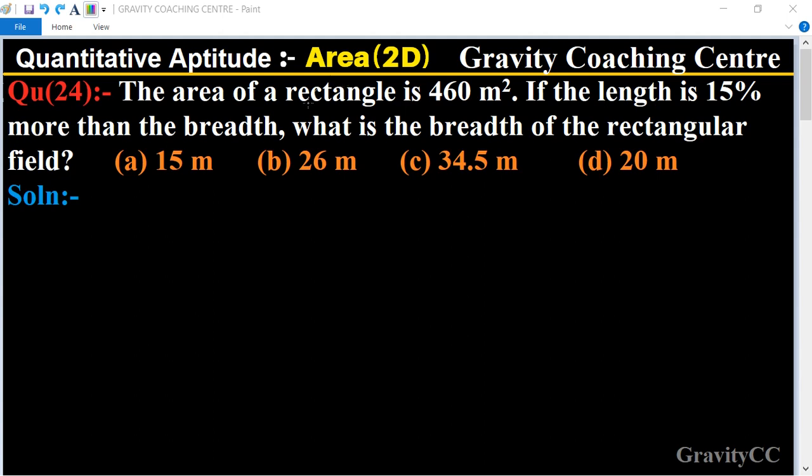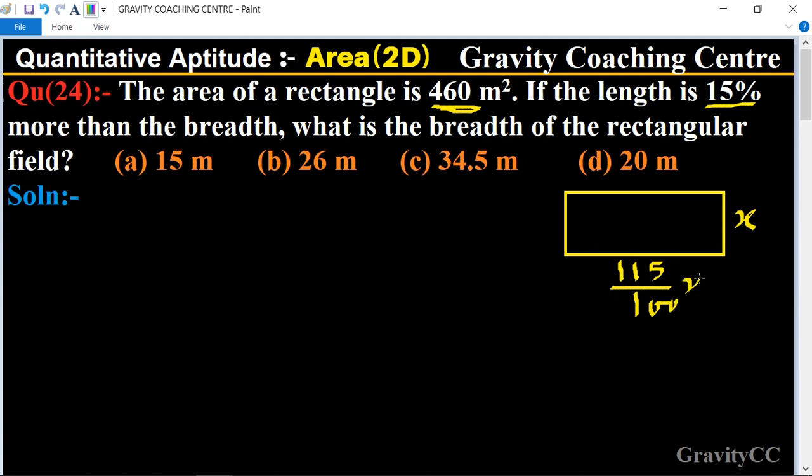In this question, area is given 460 meter square and length is 15% more than the breadth. So first of all we let the breadth be X, so length is 15% more means 115 upon 100 X. So what is the breadth of the rectangular field? Area is given 460 and we know that